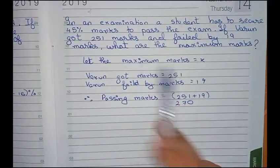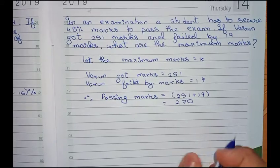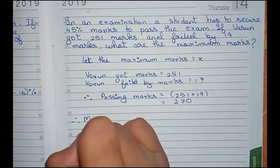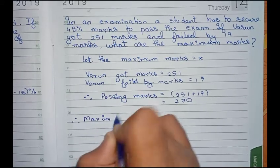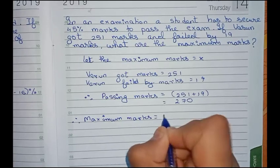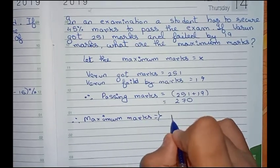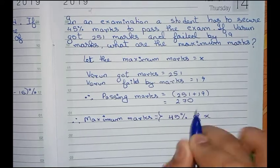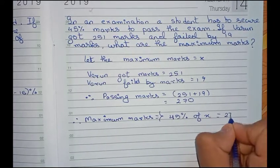So now the 45% marks is equal to 270. So therefore, I will write maximum marks equals to 45% of x, that is the total maximum marks that is equal to 270.